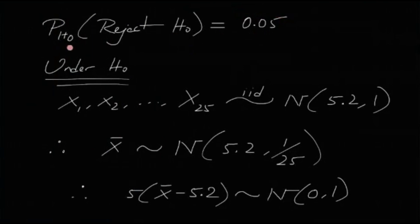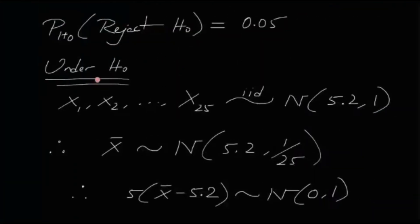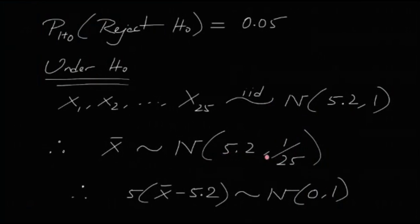Under H0, the random sample follows IID normal(5.2, 1) because H0 states mu = 5.2. Therefore, x-bar follows normal(5.2, 1/25), and consequently 5 times (x-bar minus 5.2) follows a standard normal distribution.